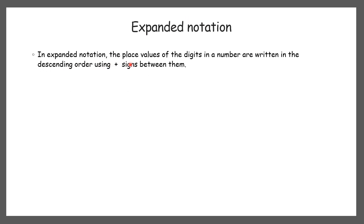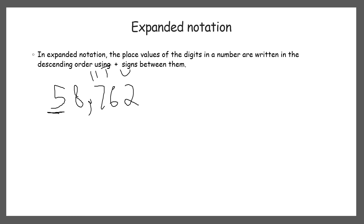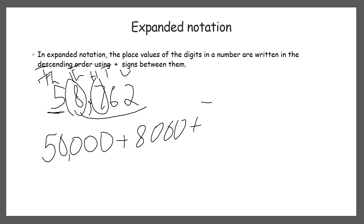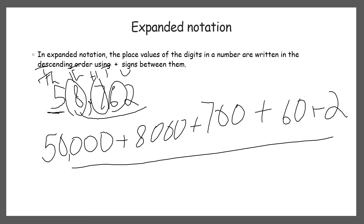Now, expanded notation. In expanded notation, the place values of digits in a number are written in descending order using plus signs between them. For example, to write 58762 in expanded form: 5 is at the ten-thousands place, so we write 50,000; then 8 is at thousands, so 8,000; then 7 is at hundreds, so 700; then 6 is at tens, so 60; and then 2. So the expanded form is: 50,000 + 8,000 + 700 + 60 + 2.